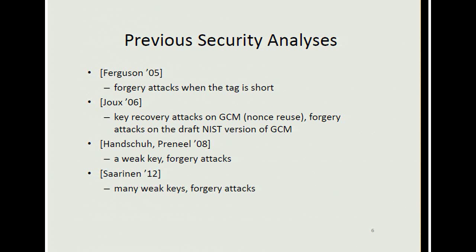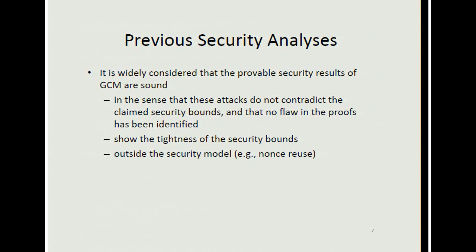There have been several attacks. Ferguson showed that forgery attacks are possible when the tag is short. Joux showed key recovery attacks on GCM by reusing the nonce, and showed forgery attacks on the draft NIST version of GCM. Handschuh and Preneel pointed out there is a weakness in GCM, and Saarinen pointed out that there are many weaknesses in GCM. Still, it is widely considered that the provable security results of GCM are sound — these attacks do not contradict the claimed security bounds, and no flaw in the proof has been identified. Some attacks show the tightness of the security bounds, and others are outside the security model, for instance when the nonce is reused.